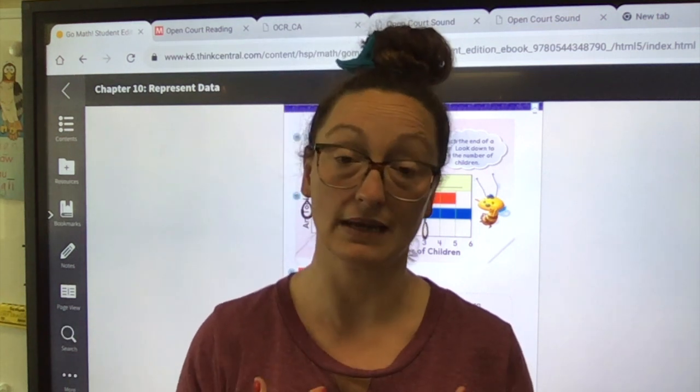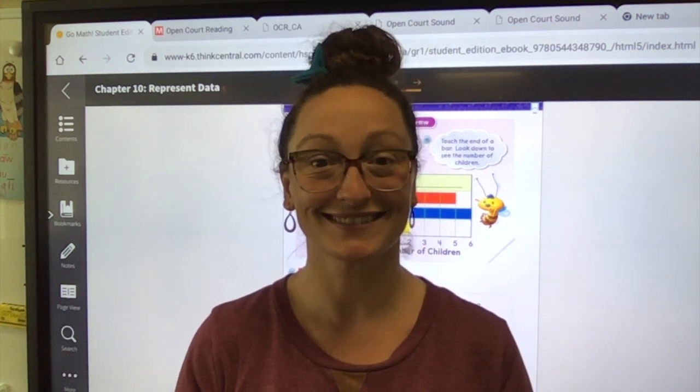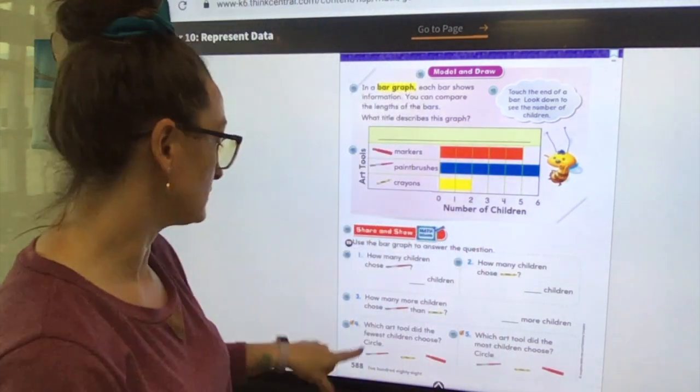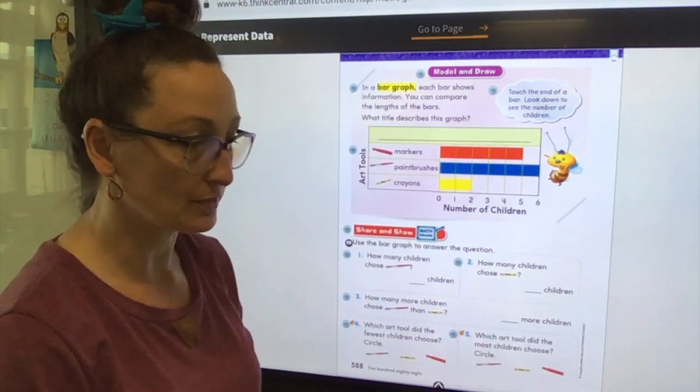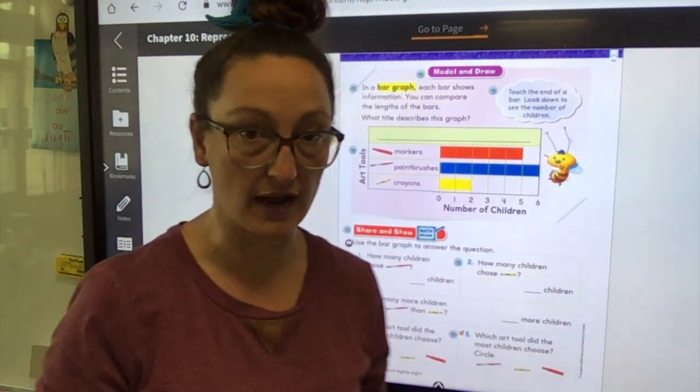All right, so that is it for reading. What, three minutes in, we're done with reading. Or at least I am, you have worksheets. So, all right, and for math we're going to look at page 588 in your math books. Instead of picture graphs we're going to move on to bar graphs.